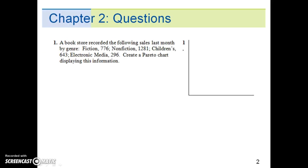Question 1. A bookstore recorded the following sales last month by genre: Fiction 776, Nonfiction 1281, Children 643, Electronic Media 296. Create a Pareto chart displaying this information.